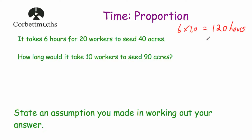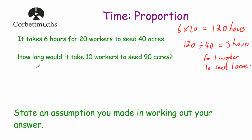If we take the 120 hours and divide that by 40, we'll see how long it takes 1 worker to seed 1 acre. So 120 divided by 40 is equal to 3 hours. So it takes 3 hours for 1 worker to seed 1 acre. Now if we have 90 acres, it would be 90 multiplied by 3 to find out how many hours it would take for 1 worker to seed 90 acres altogether. So 90 multiplied by 3 is equal to 270 hours.